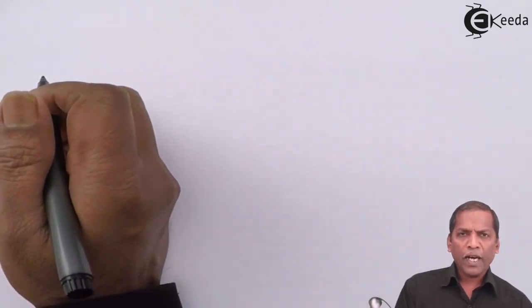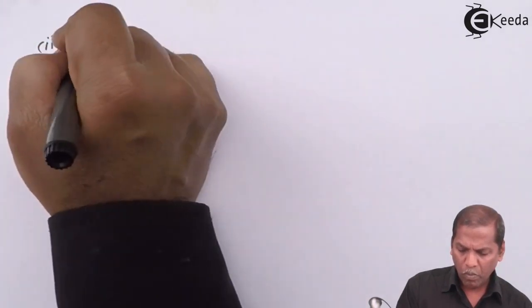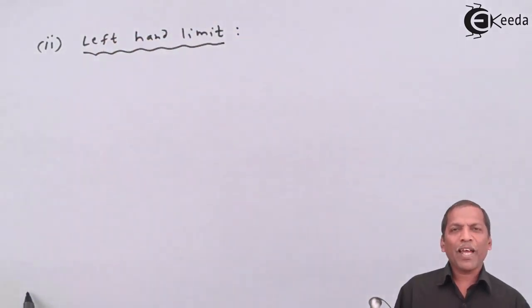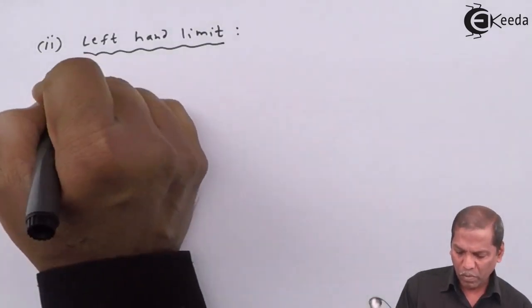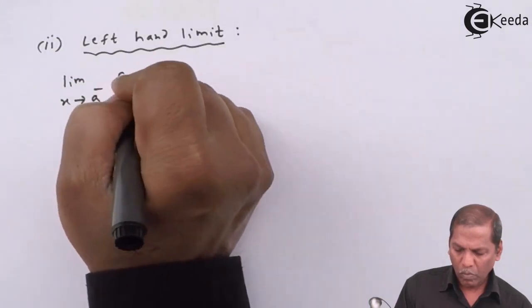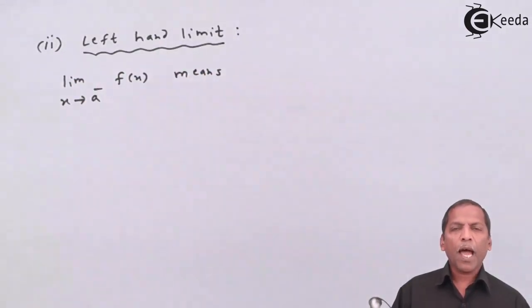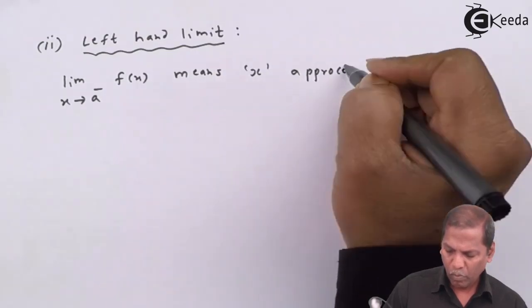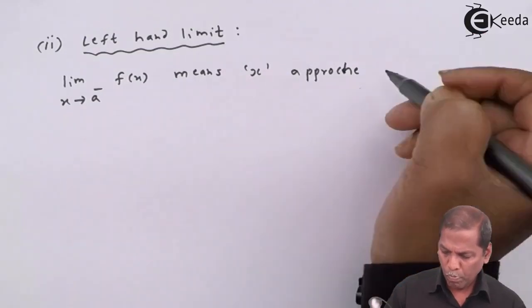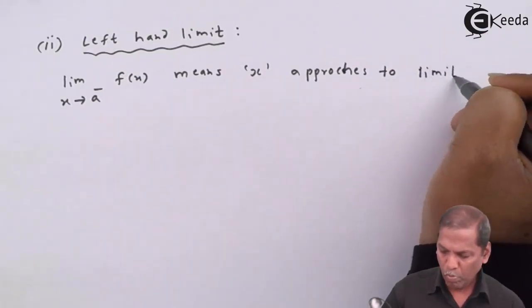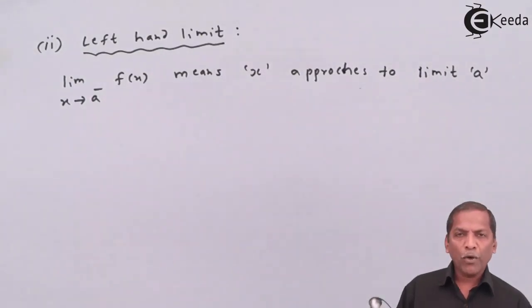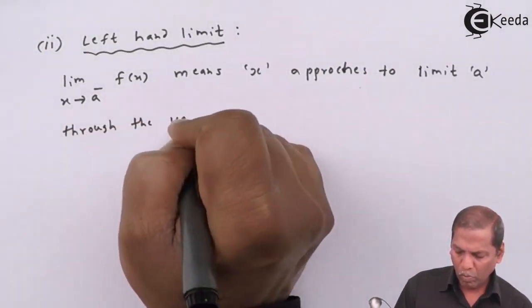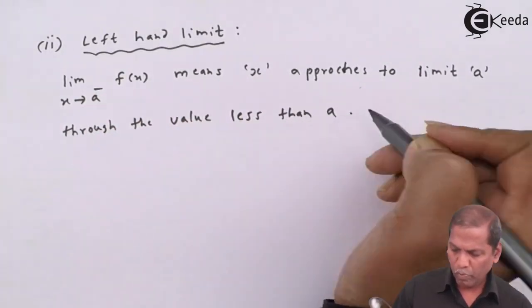Now we go through left-hand limit. Limit x tends to a minus f(x) means x approaches to a through a value less than a.